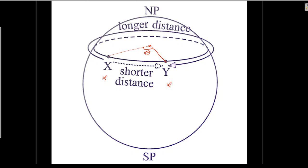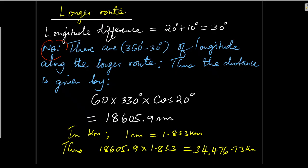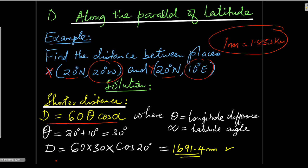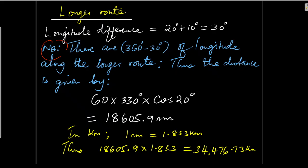Now let's go to the longer distance along the same parallel of latitude. We've already got the longitude difference as 30. But because we are using the longer route, we are not going to use 30 as the longitude difference — we shall use the remaining angle, which is 330 degrees. Because theta was 30 degrees, the remaining angle along the longer route is 360 − 30 = 330.